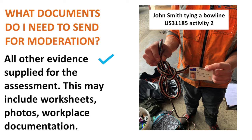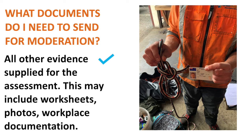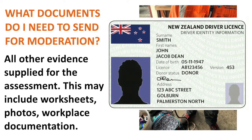Label photos and videos with the learner name, the task they are doing, and what the task relates back to in the assessment. For example: John Smith, tying a bowline, US 31185, Activity 2. Here's a tip: a driver's license is a great way to identify the learner in photos.